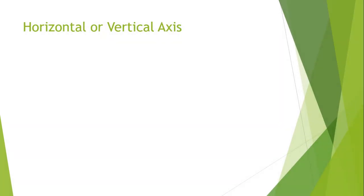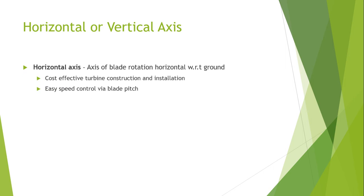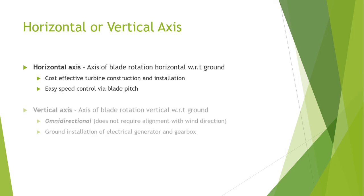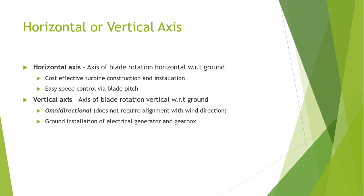Next is the comparison between horizontal and vertical axis wind turbines. In the horizontal axis wind turbine, the axis of blade rotation is horizontal with respect to the ground, whereas in the vertical design, the axis of blade rotation is vertical with respect to the ground. Horizontal axis wind turbines are considered cost-effective and are mostly used for commercial installation purposes.